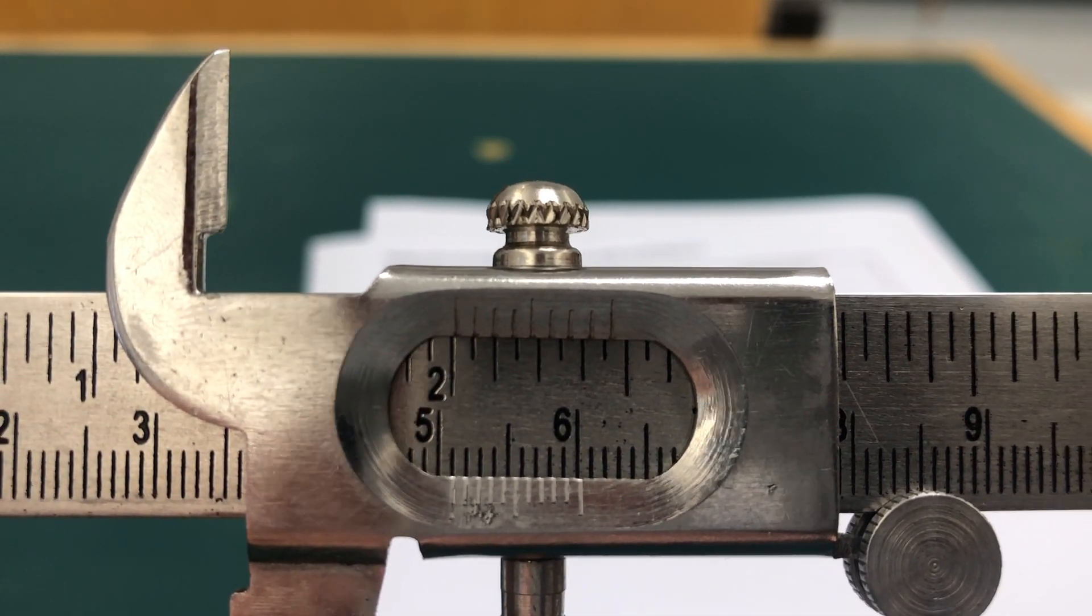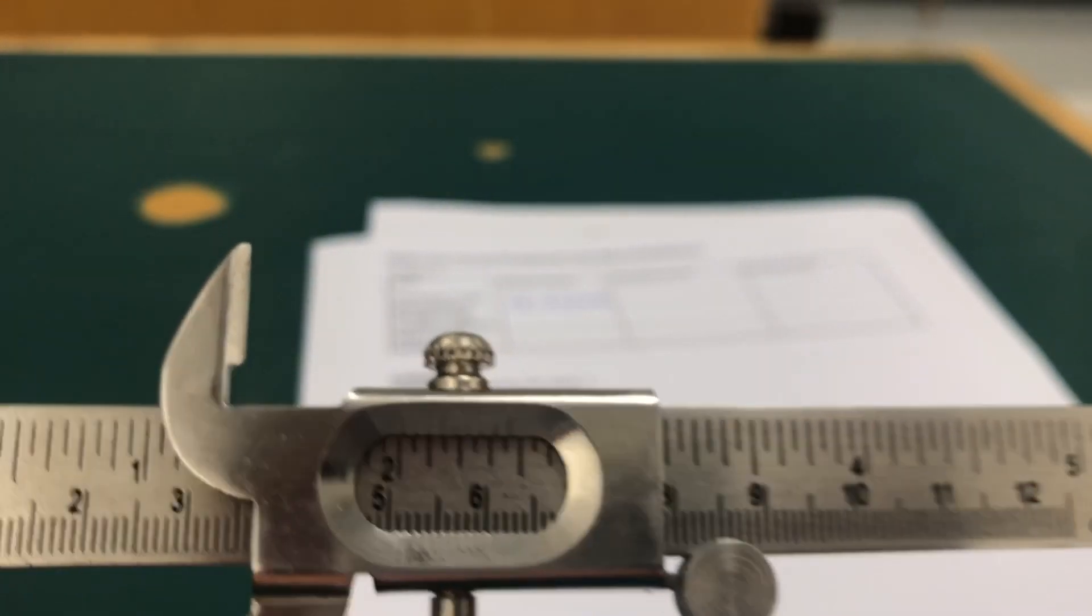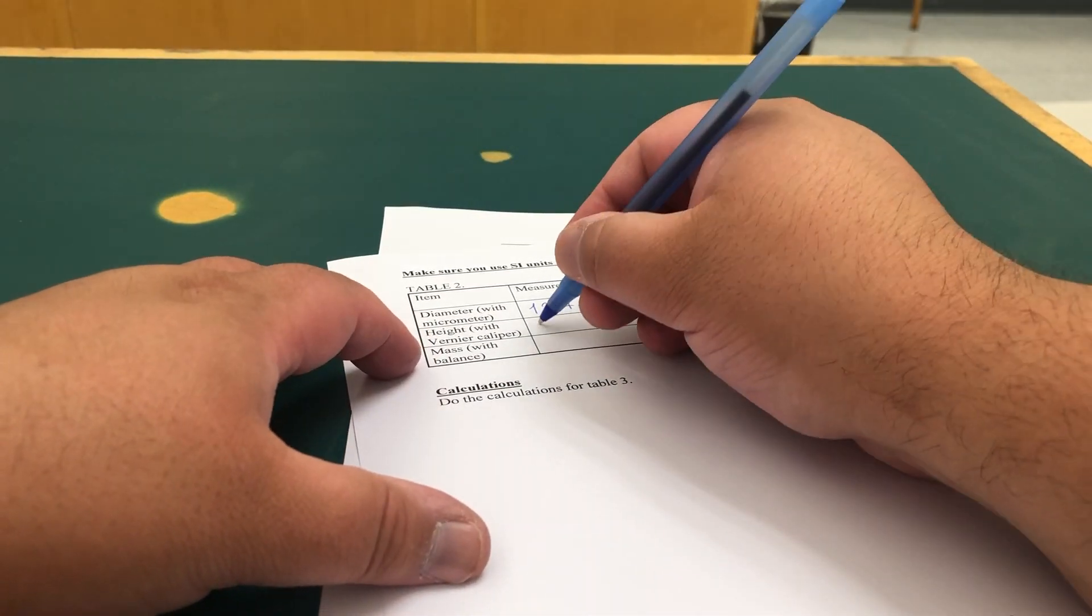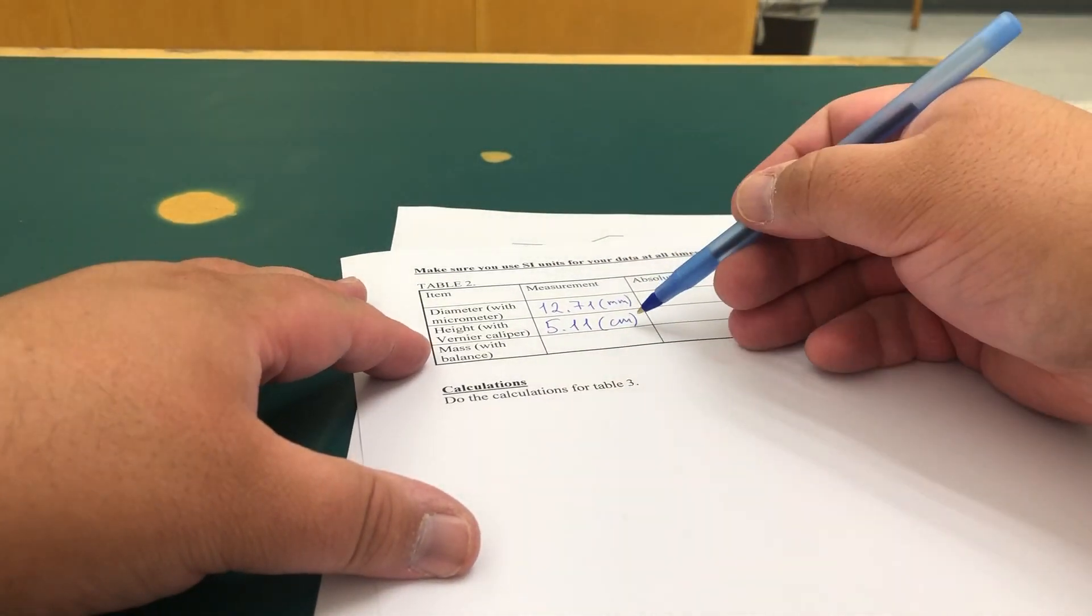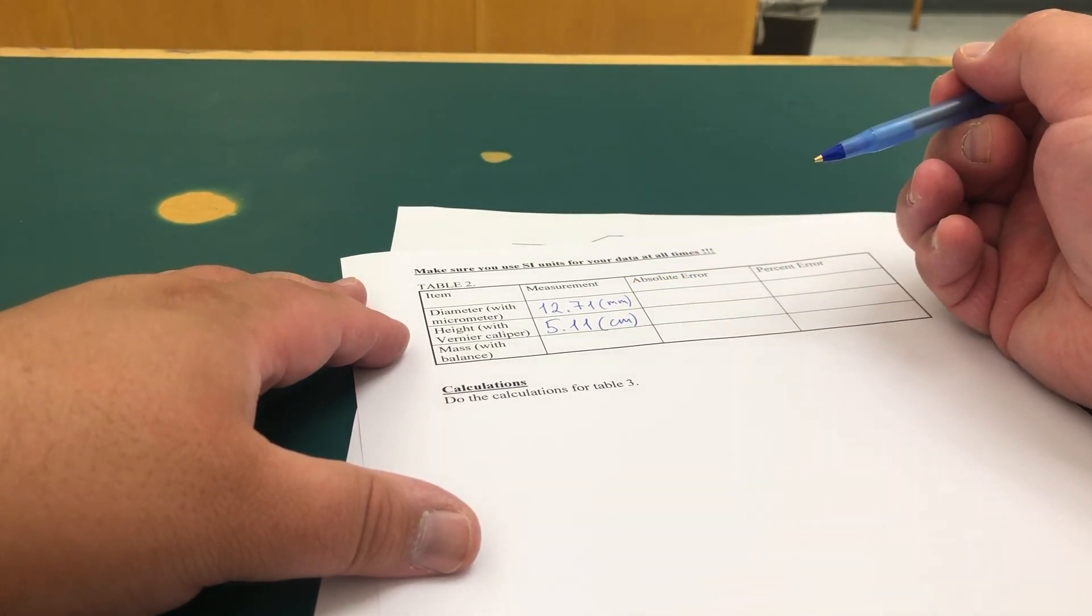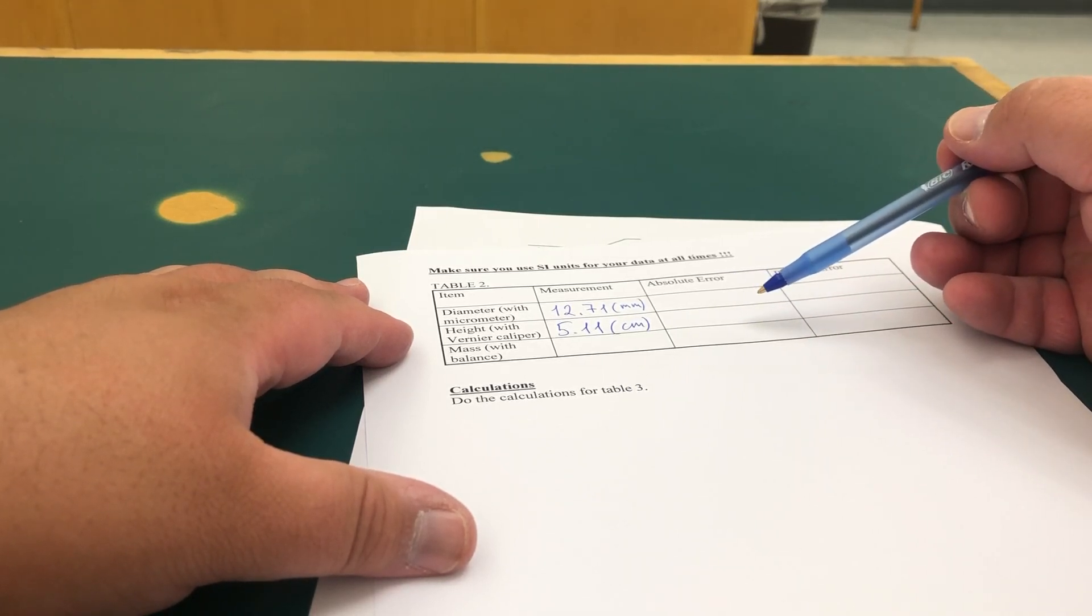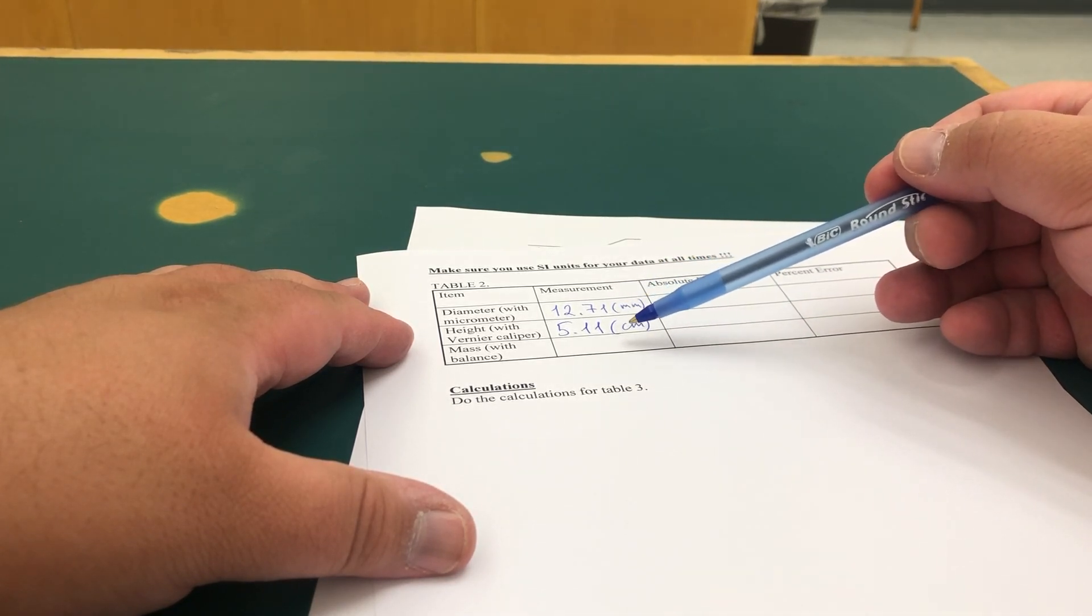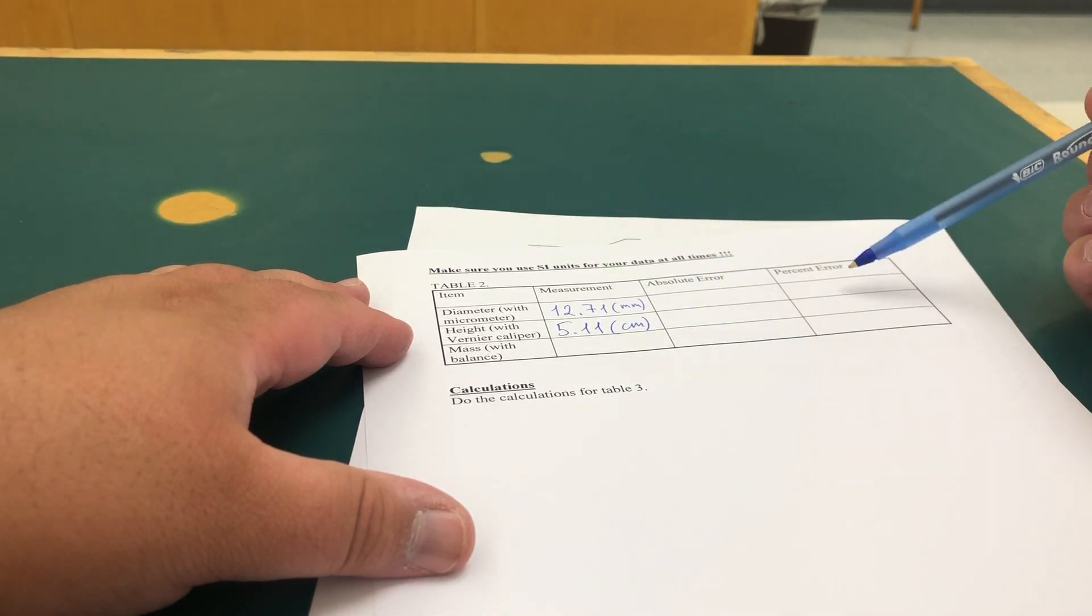So the reading is 5.11 centimeter. Let's write that down: 5.11 centimeter. Be careful this time, it's centimeters, not millimeters. And for absolute errors, once again the least significant digit, hundredths of a millimeter, and hundredths of a centimeter. And then you calculate the percent error.